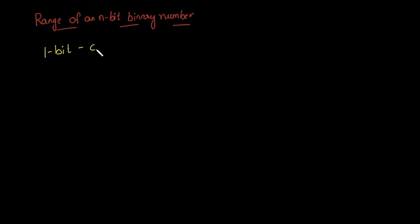It can represent 0 or 1, so the range is 0 to 1. If we have a 2-bit binary number, the values it can represent are: 0 as 00, 1 as 01, 2 as 10...